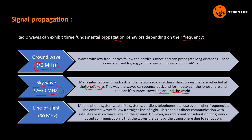Line of sight propagation is used in mobile phone systems and satellite systems at higher frequencies. The emitted waves follow a straight line of sight, enabling direct communication with satellites or microwave links. However, for ground-based communication the waves are bent by the atmosphere due to refraction.